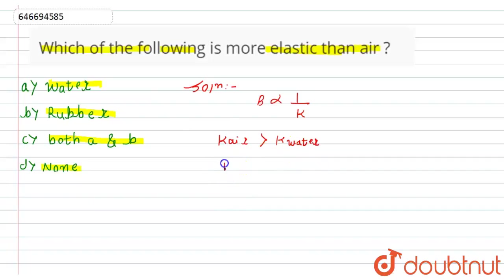The bulk modulus for water will be more compared to the bulk modulus of air. Hence, we can state that more compressibility gives us less elasticity.